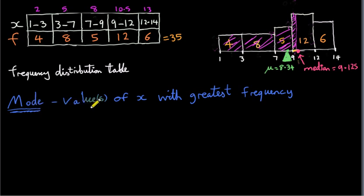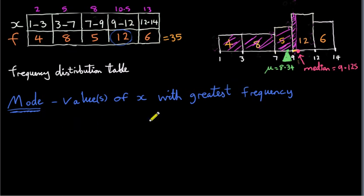The mode is the value or values of x with the greatest frequency. Looking at the intervals, it's fairly clear that the interval 9 to 12 has the greatest frequency — there are 12 values of x lying between 9 and 12. We can only talk about intervals here because this is a grouped frequency distribution table. It's also the tallest rectangle, so the mode is the interval 9 to 12.